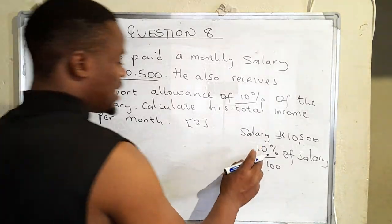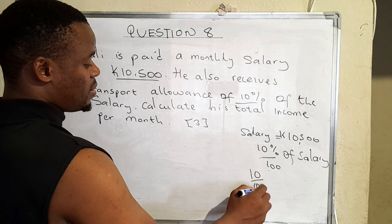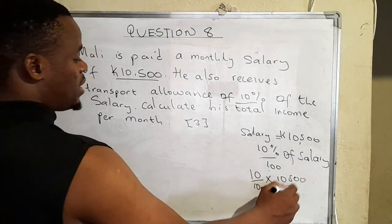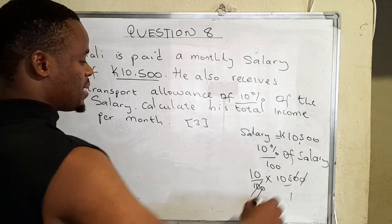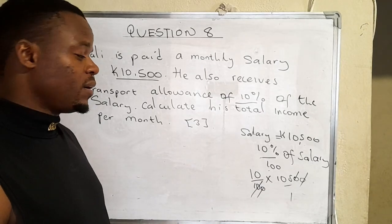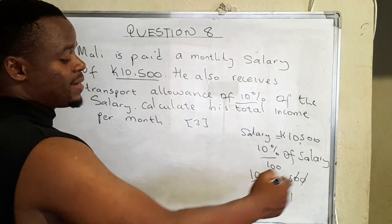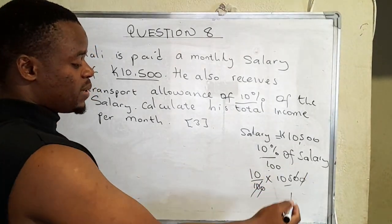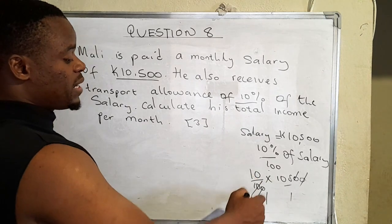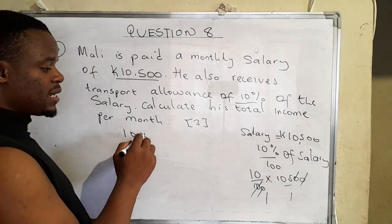So ten percent of the salary: we say ten over one hundred times ten thousand five hundred. We introduce a one, then we cancel zeros diagonally — that zero and that zero go, and that zero goes too. I'm simplifying the numbers so that after multiplication you won't have a challenge dividing bigger numbers. We relate numbers diagonally, cancel out the zeros, and we're left with one zero five. So we have ten times one hundred and five.